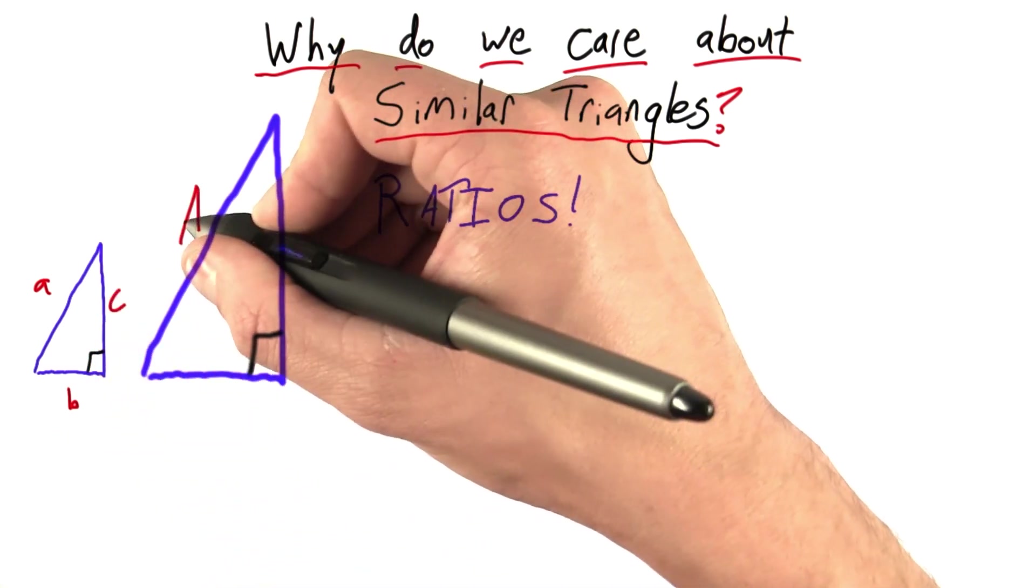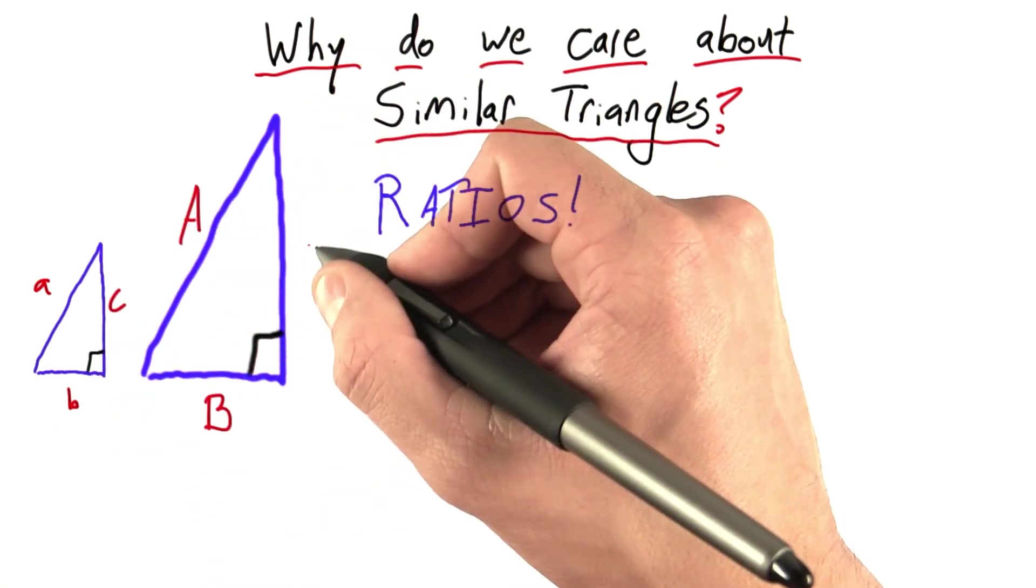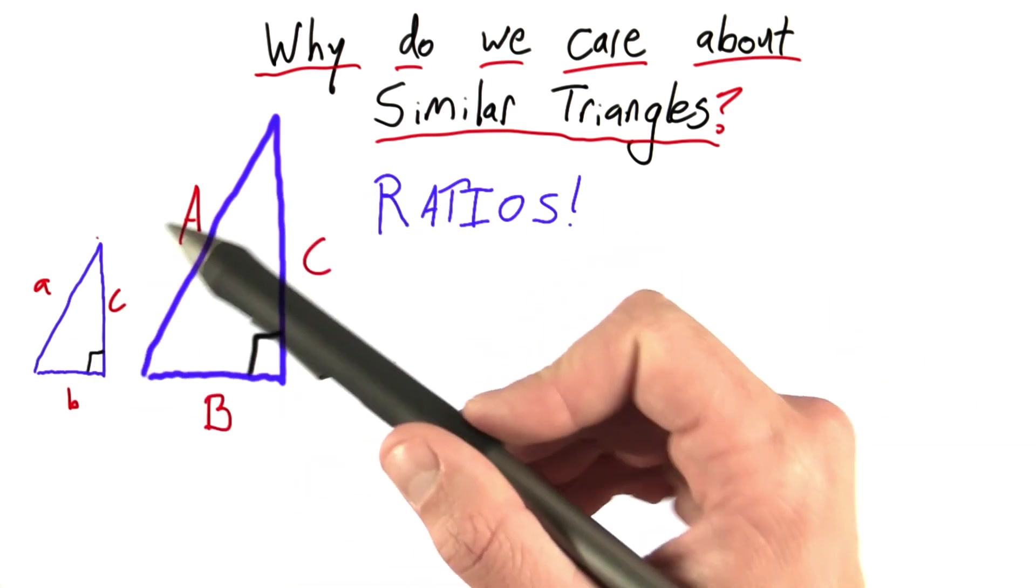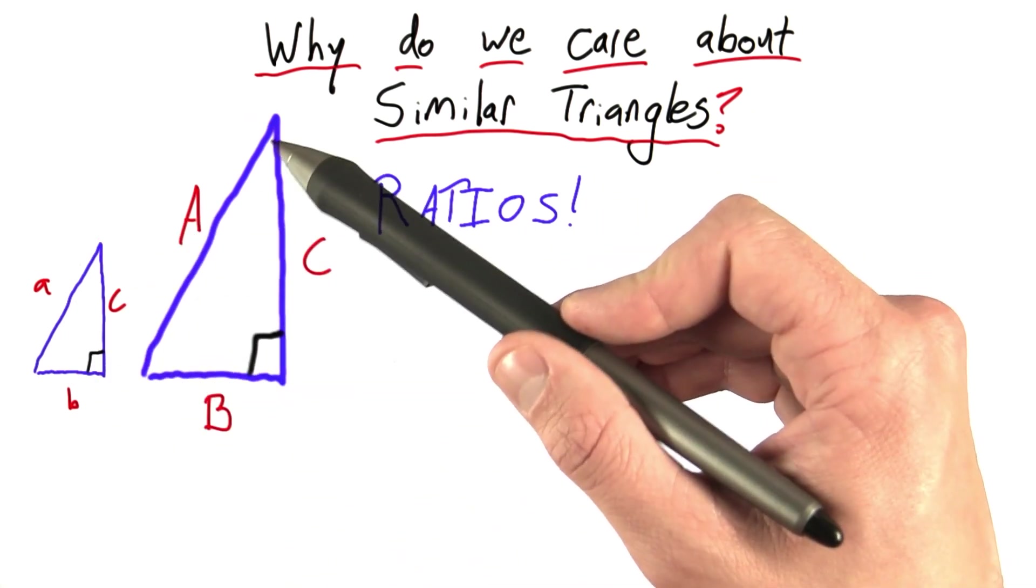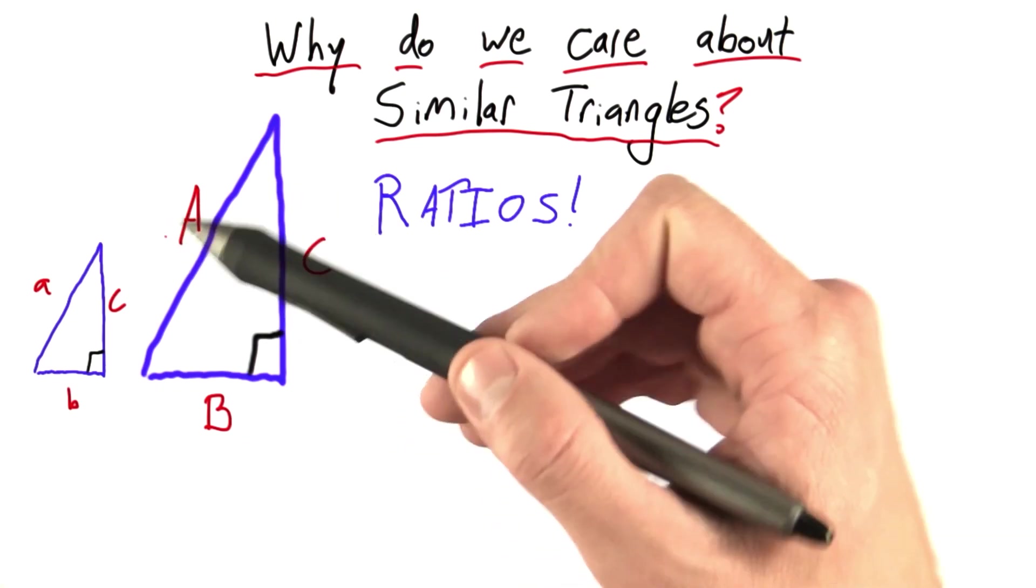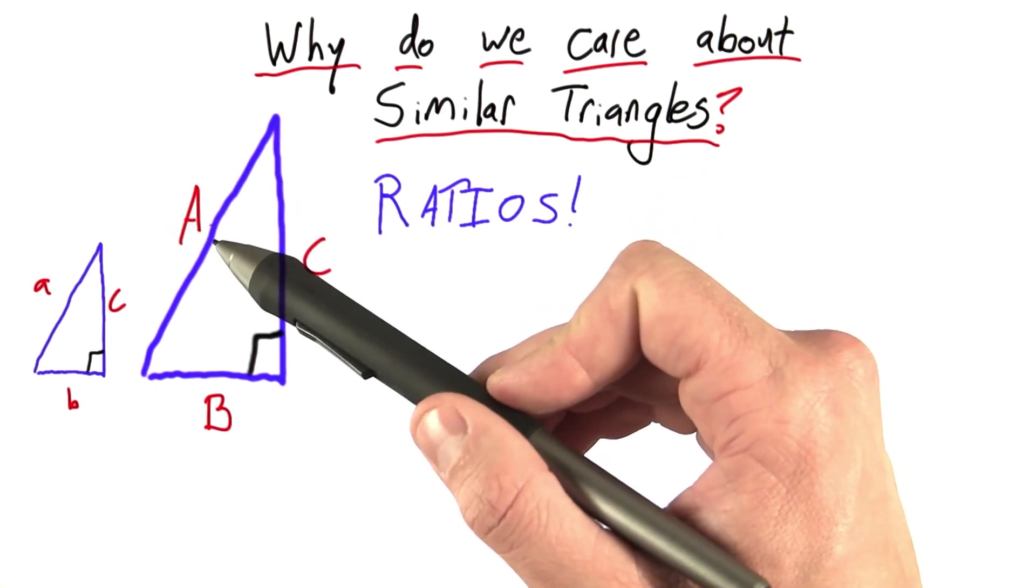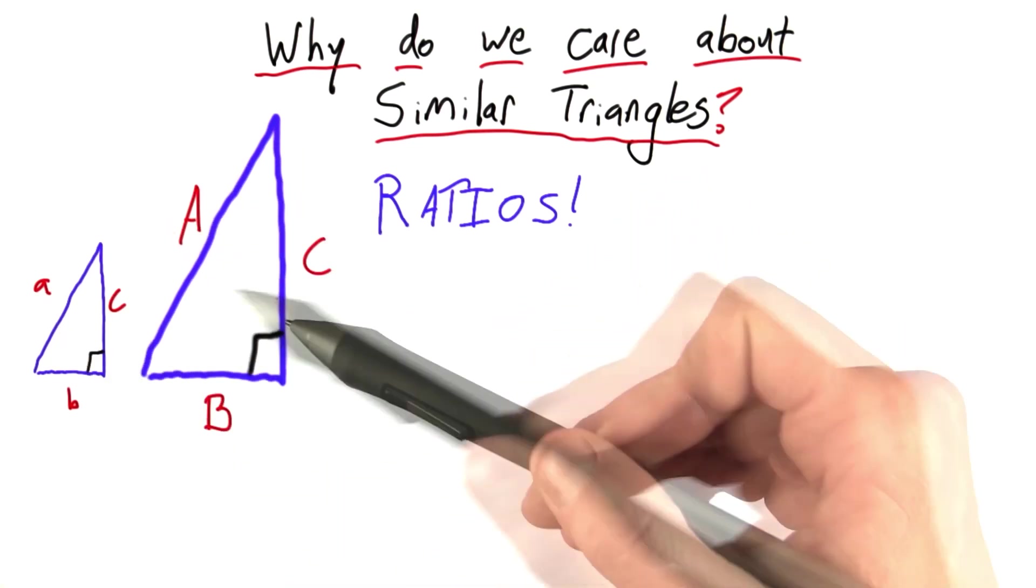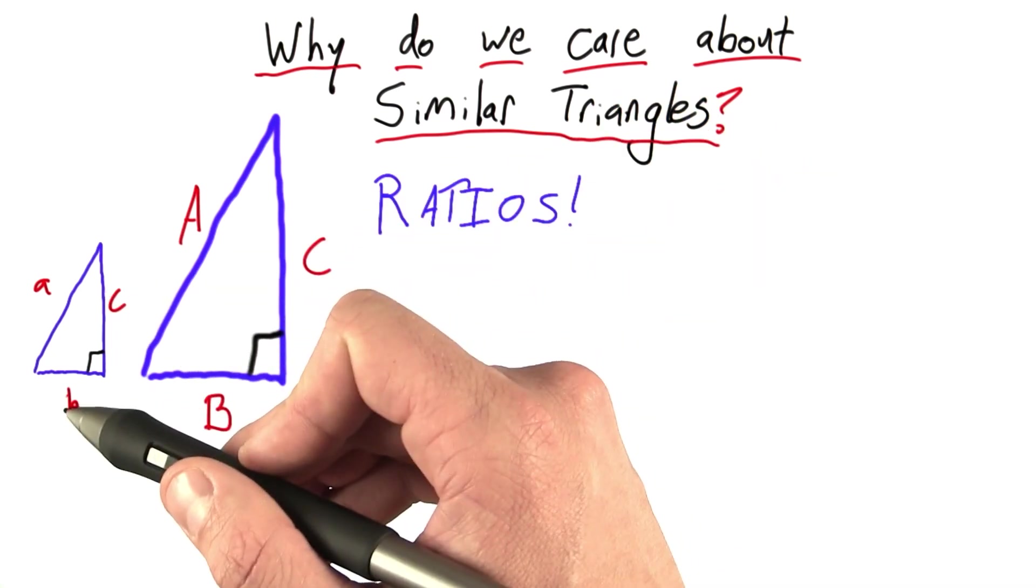and these sides big A, big B, and big C. And you can see that even though these sides are all longer, there's some correspondence between side big A and side little a. Likewise with the big C and the little c, and the big B and the little b.